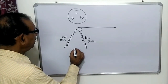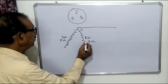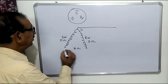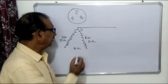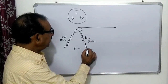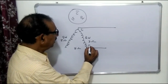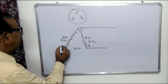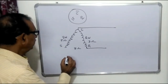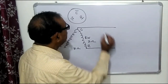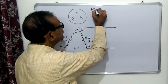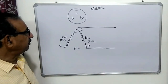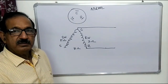These resistance values will be different for different compressors. If we measure the resistance between the remaining two points — running and starting — we will get the sum of these resistances, which will be around 8 ohms. The point where we get the low resistance will be our running terminal, and the point where we get the high resistance will be our starting terminal.